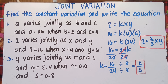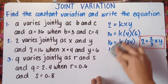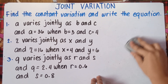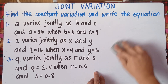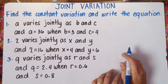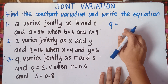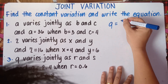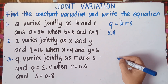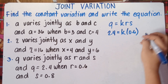Alright, let's try number 3 — pause the video for number 2. For number 3, Q varies jointly as R and S. So Q equals KRS. Q is 2.4, so we have a decimal now. 2.4 equals K times R times S, where R is 0.6 and S is 0.8.